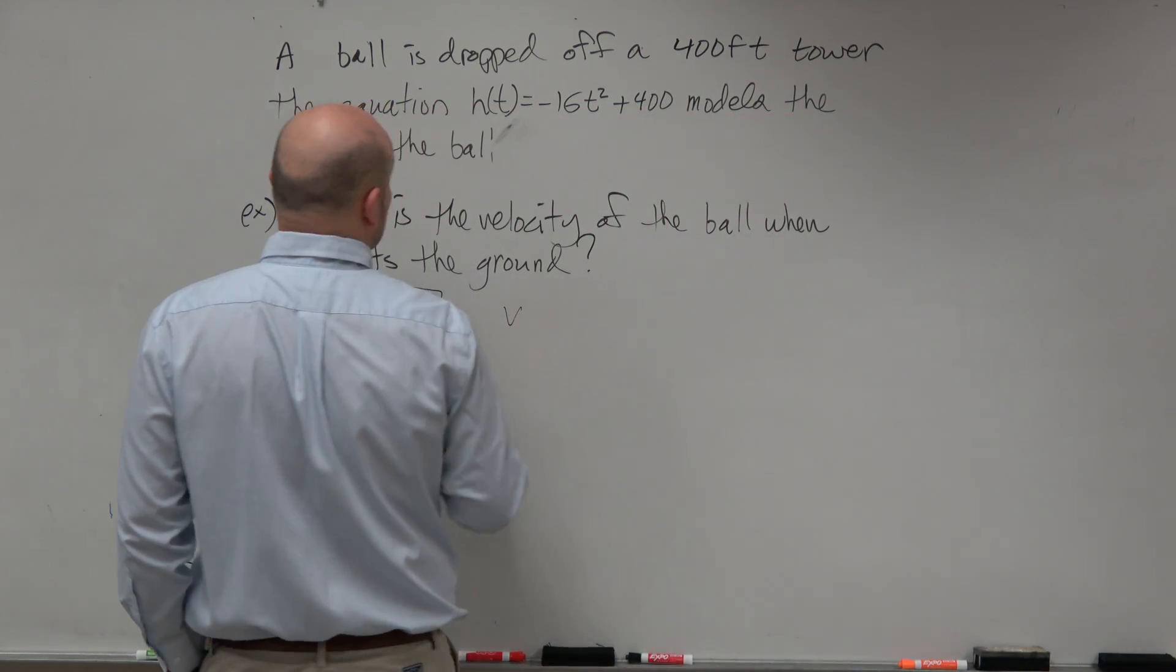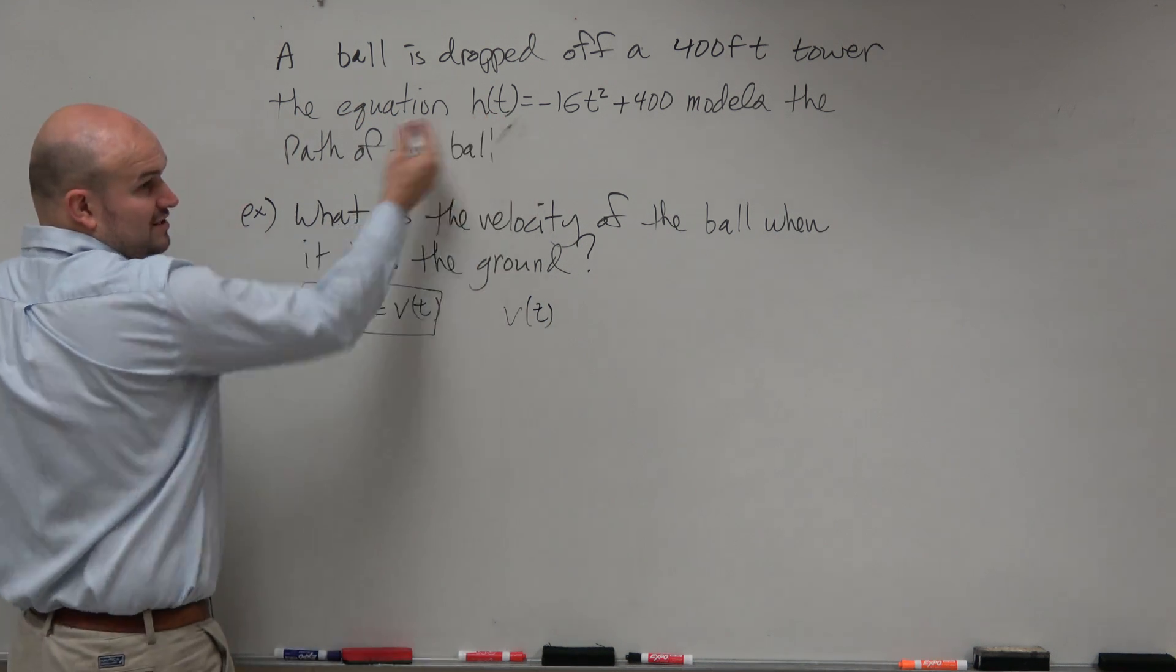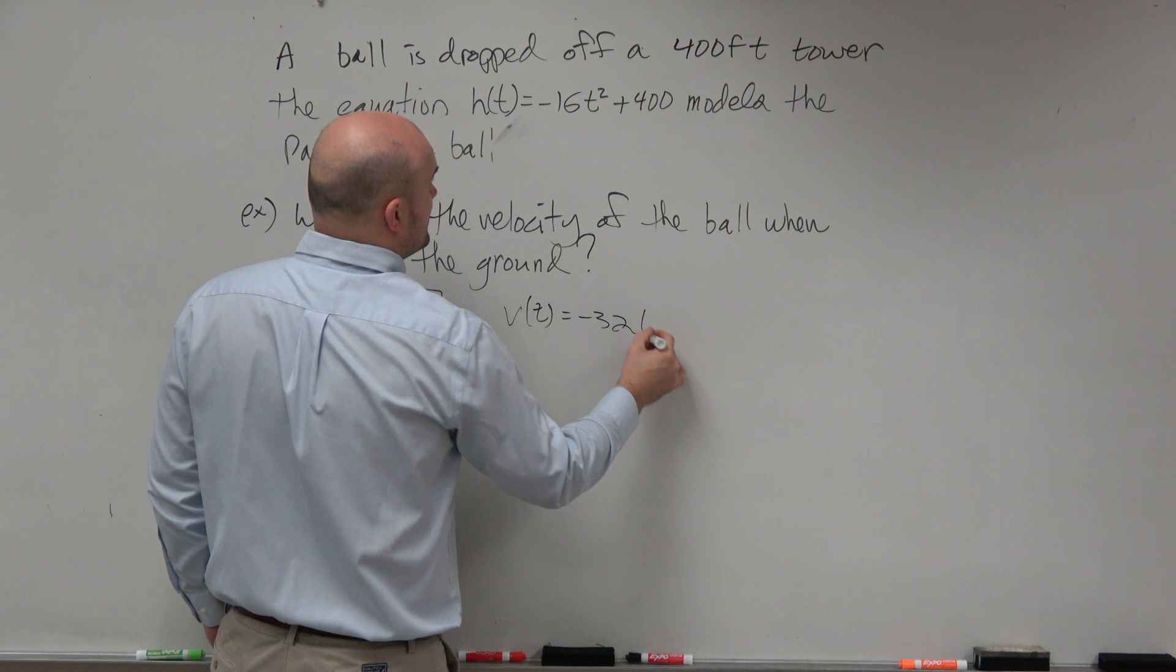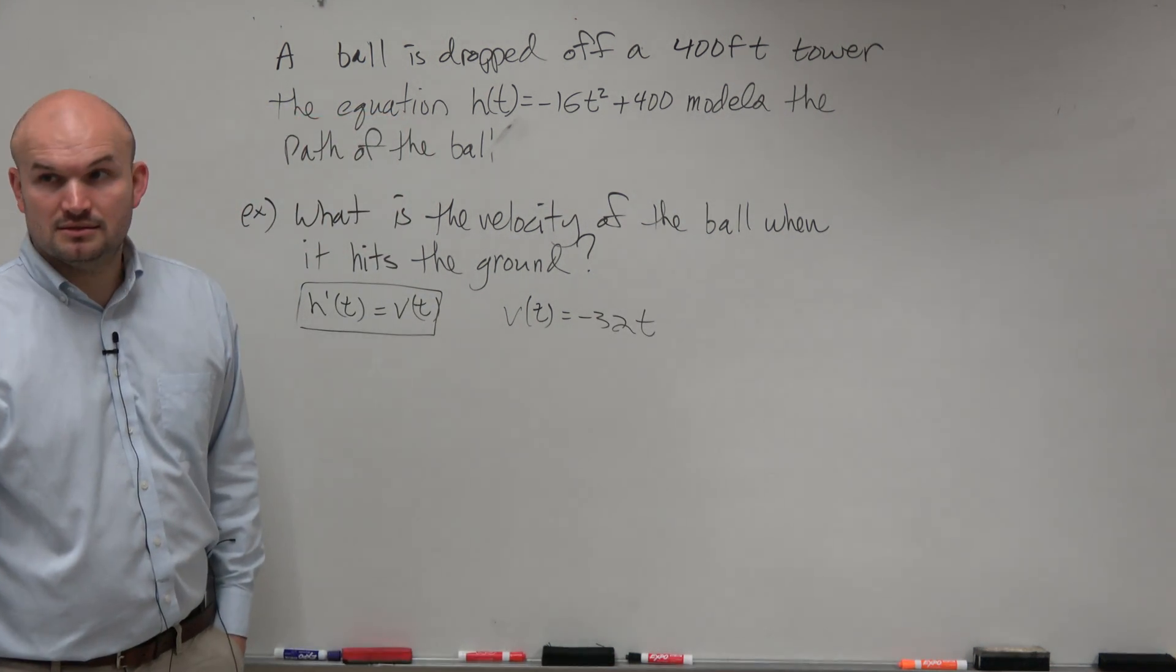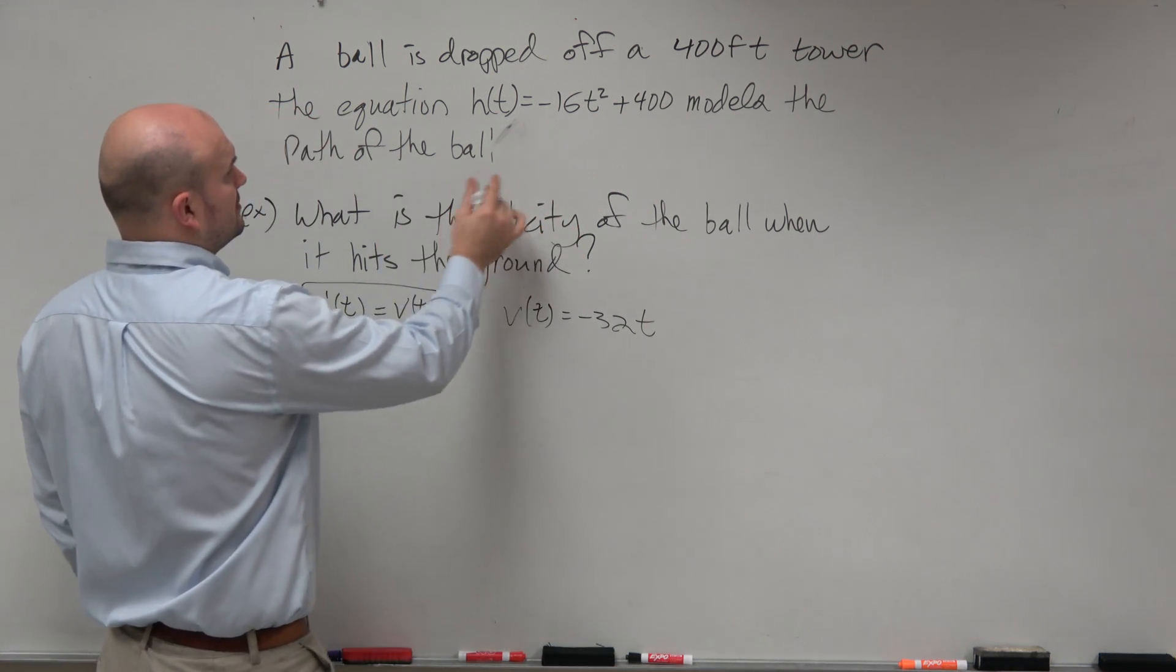So now that I have that identified or defined, I'll just go ahead and use v(t), which is my derivative of h(t). So that's going to be equal to negative 32t.